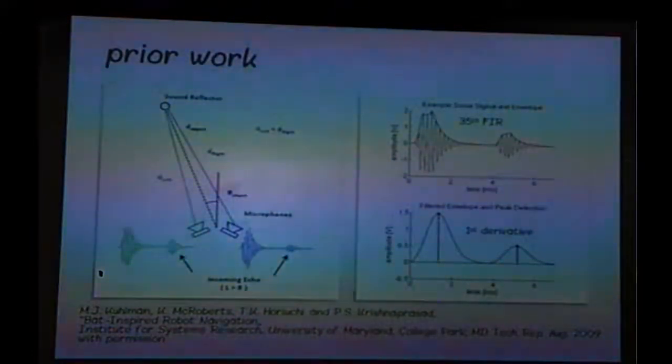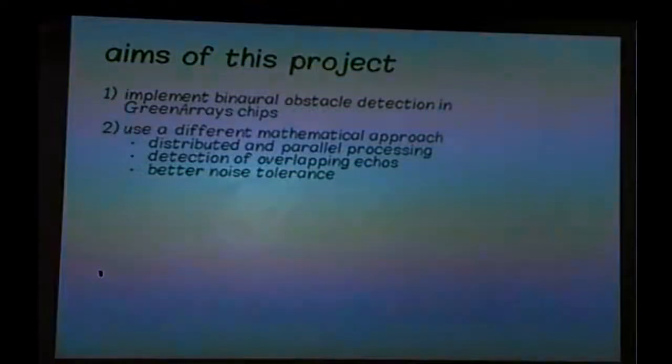However, this approach has several drawbacks. First, the filter has to be really good, because otherwise you end up with little bumps, and first derivative can misinterpret them as peaks. And second, first derivative is not capable of distinguishing between strongly overlapping peaks. It will just find one maximum. So in my project, I wanted to implement binary obstacle detection in GreenArrays chips, but to use a different mathematical approach to overcome those limitations.